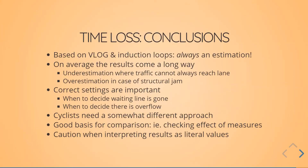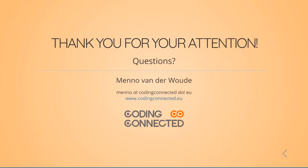To conclude: it's always an estimation, but on average the results come a long way. There's underestimation where traffic cannot always reach the lane, and overestimation in the case of structural jams can occur. Correct settings are important — when to decide the queue is gone and when to decide there's overflow are critical. For cyclists a different approach is needed, which I've already implemented. This is a good basis for comparison: municipalities can get a clear view of the effect of certain measures based on this logging data. However, be cautious when interpreting these results as literal values — it comes a long way, but it can also differ from reality.